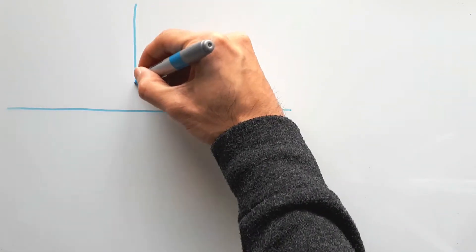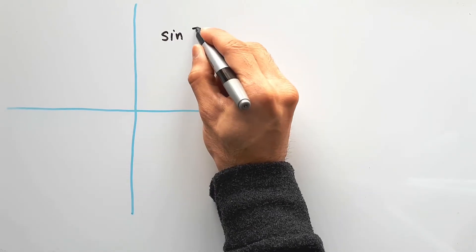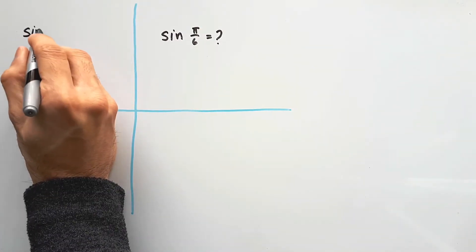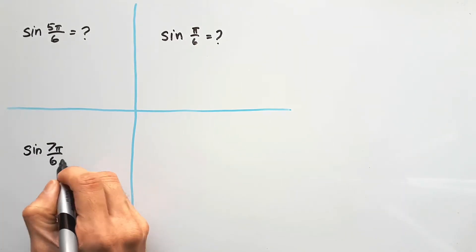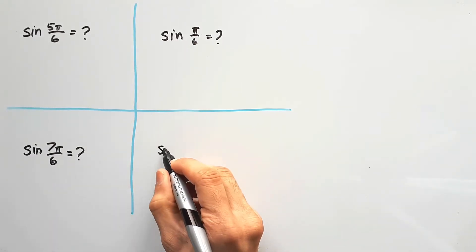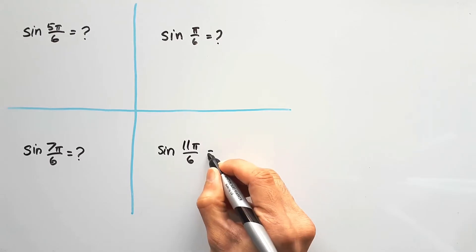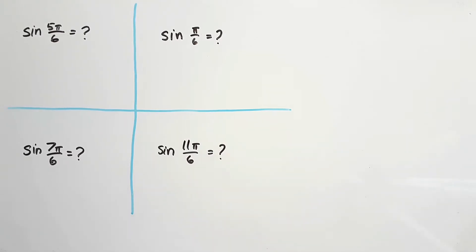Try out these questions. I'll write them in the four quadrants: first quadrant has sin π/6, second quadrant has sin 5π/6, third quadrant has sin 7π/6, and the fourth quadrant will have sin 11π/6. Pause the video and give them a go!